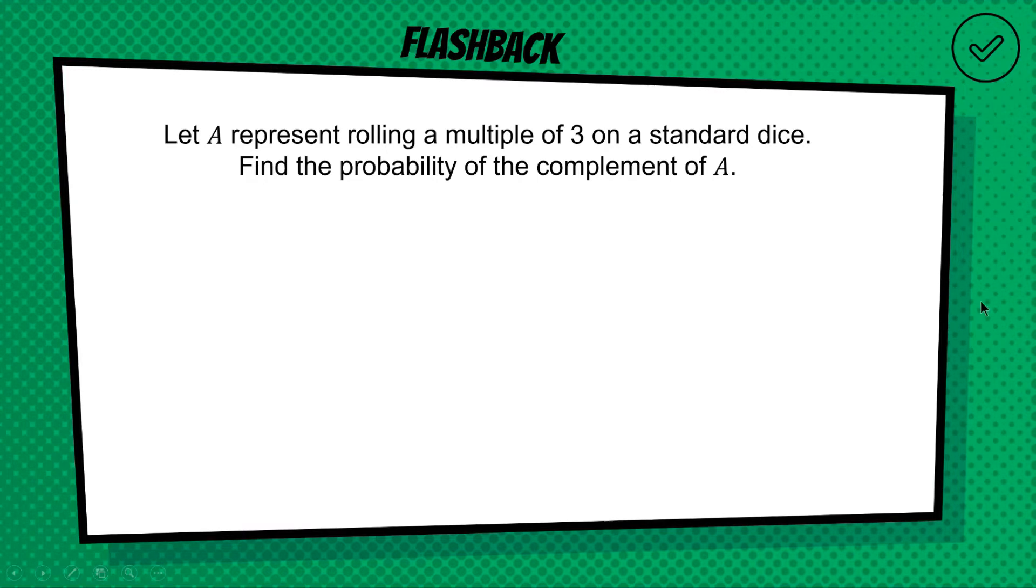All right, so hopefully you've paused the video and had a go yourself. So first of all, the probability of rolling a multiple of three, well the multiples of three would be three and six. Yeah, three times one and three times two. So the probability of doing that would be two out of six, two options out of six possibilities, which is a third of course. So if that's the probability that we roll a multiple of three, what is the probability of the complement, which means we don't do that?